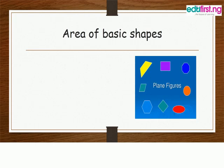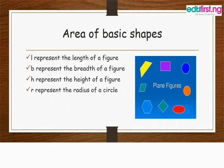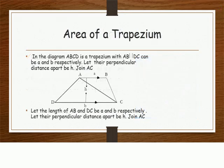Area of triangle is half base times height. Area of circle is pi r squared. Now the representation of alphabet on each of its formulas: L represents the length of a figure, B represents the breadth of a figure, H represents the height of a figure, and R represents the radius of a circle.